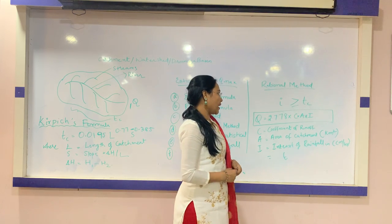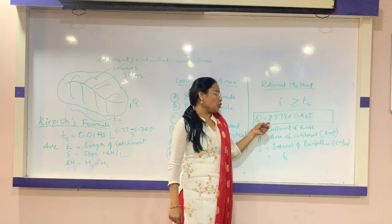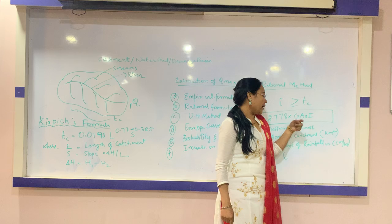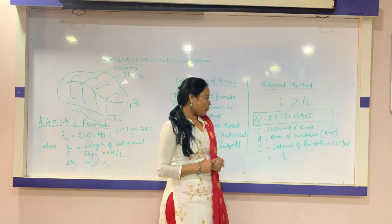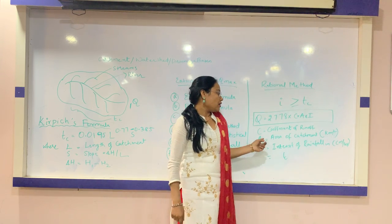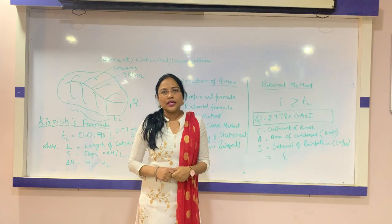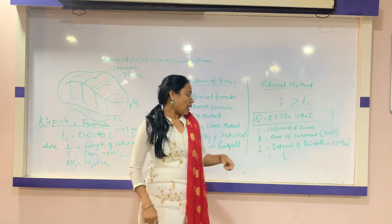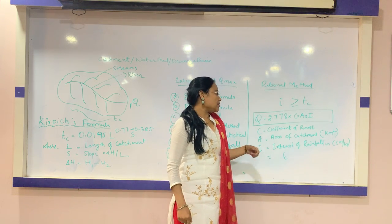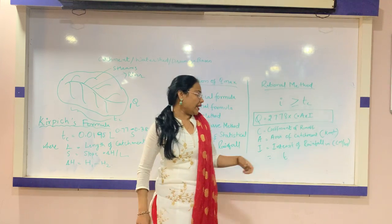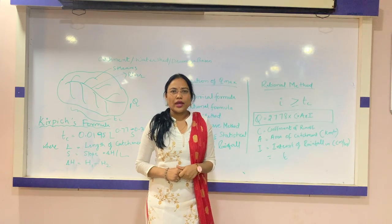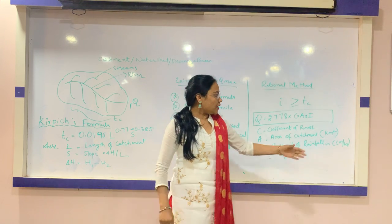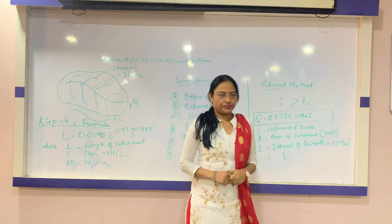The rational formula states that Q_max = 2.778 × C × A × I, where C is the coefficient of runoff, which depends upon various regional factors in the catchment. A is the area of the catchment, usually taken in square kilometers, and I is the intensity of rainfall in centimeters per hour.